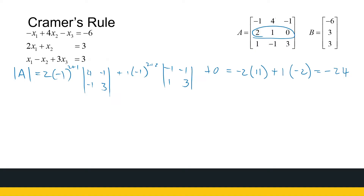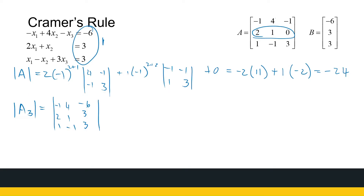To calculate the value of x3, I need to find the determinant of A3. The matrix A3 is obtained by taking matrix A and replacing the third column with minus six, three, and three. The first two columns stay the same: minus one, four, two, one, and one, minus one. I'm going to use the first row to calculate the determinant. You can use any row or any column — I suggest you use a different row or column than me to see if we get to the same answer. It's good practice for calculating determinants.